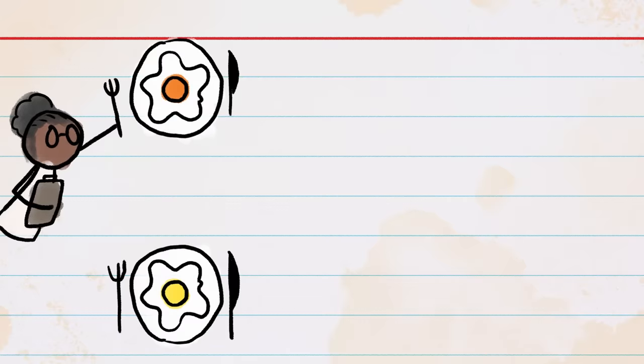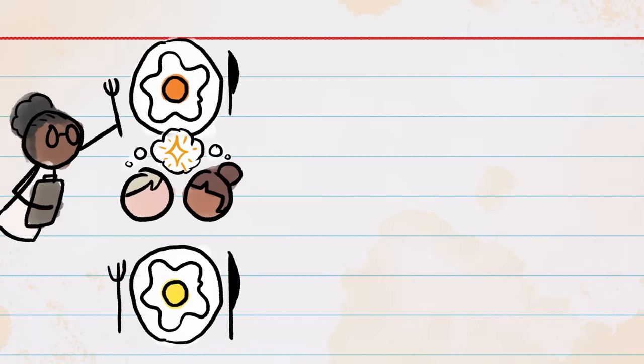When researchers serve up two plates of eggs, it doesn't matter how they're cooked, one with darker yolks than the other, people almost inevitably say the darker-yolked eggs taste better.